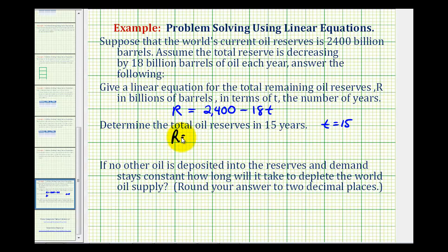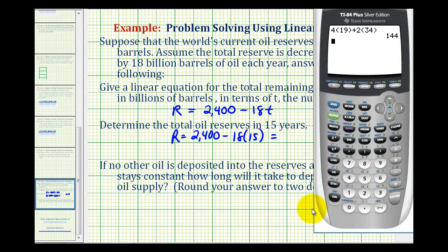So we'll have R equals 2,400 minus 18 times 15. So we have 2,130, which means after 15 years the oil reserve is going to be 2,130 billion barrels.